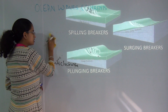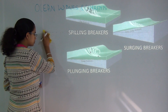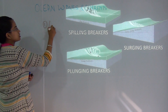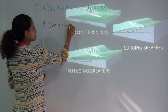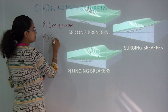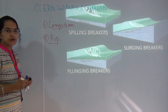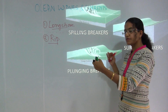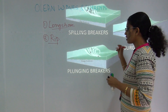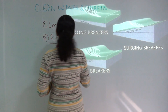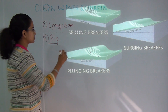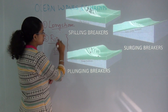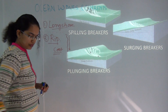Among ocean currents, some are predominantly found in coastal regions. There are two types: longshore current and rip current. What we studied earlier was that waves move perpendicular to the coastline. But longshore current is a unique feature that runs parallel to the coast. If this is my coastline, the longshore current runs parallel to it.